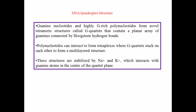Now let's talk about another important structure, another non-canonical structure of DNA which is called the DNA quadruplex structure. As the name suggests, this is a structure where four strands are interacting. It may not be four individual strands, but it may be an extension of a strand which bends in some way, but we need four nucleotide bases to donate to finally make a quadruplex structure of DNA.